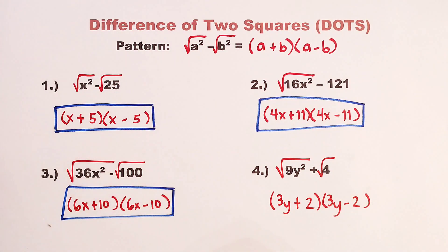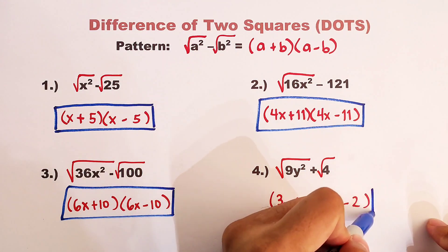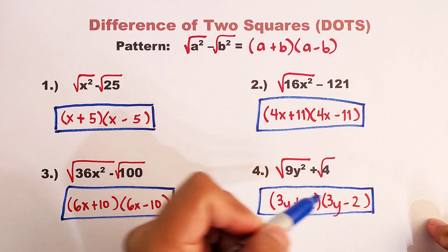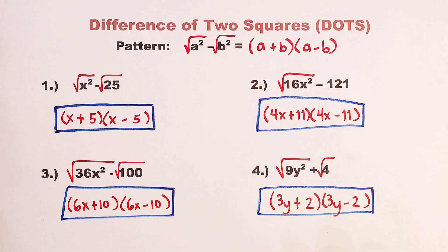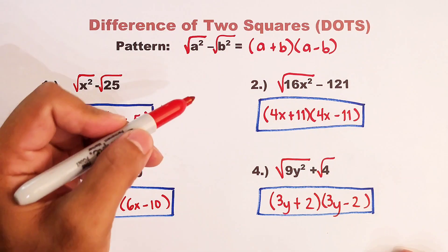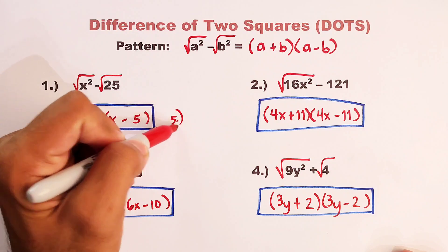So here, the factors are simply the quantity of 3y plus 2 times 3y minus 2. And guys, as part of our routine, I hope you learned something from this video. Let me give you item number 5.